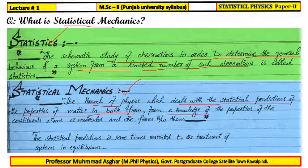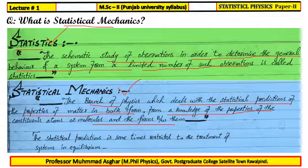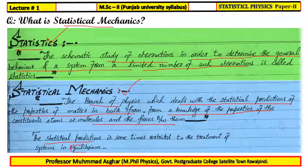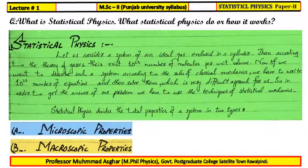Statistical mechanics derives these properties from the knowledge of the constituent atoms or molecules and the forces between them. Statistical predictions are sometimes restricted to the treatment of systems in equilibrium, so we will consider all of statistical mechanics in the equilibrium state. Now, before describing how statistical physics works, we consider why statistical techniques are important and why they are adopted.